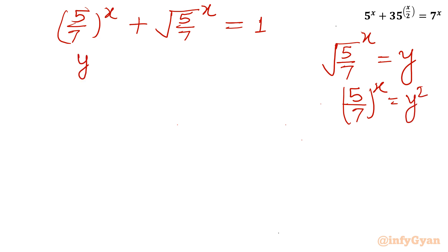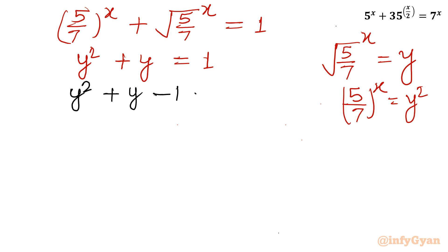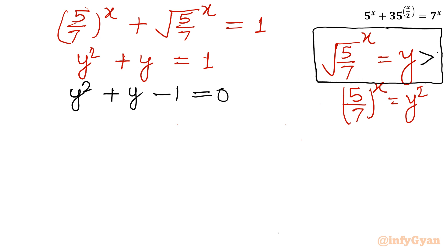So I can write y² + y = 1. This is one quadratic equation. Taking all terms to one side: y² + y − 1 = 0. Since y is an exponential function by substitution, y will always be greater than 0. It cannot be 0 or negative. So I will accept only the positive y value from this quadratic.